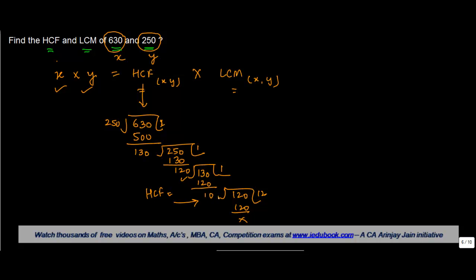Now comes the next work, which is simple, very simple. So you've got two numbers X into Y. What are the X into Y? 630 into 250 is equal to HCF - I have already computed the HCF out here which is 10 - into LCM.